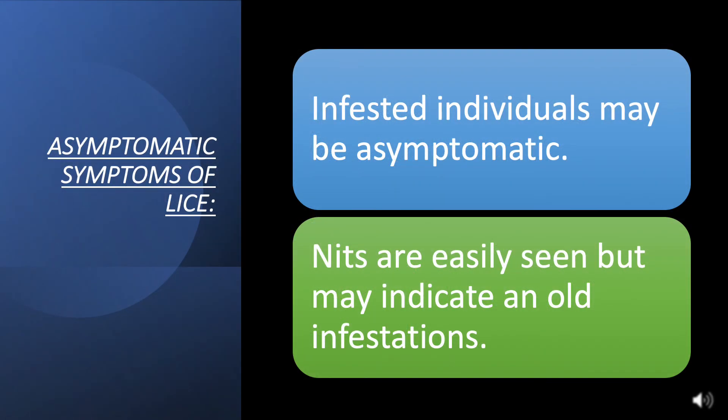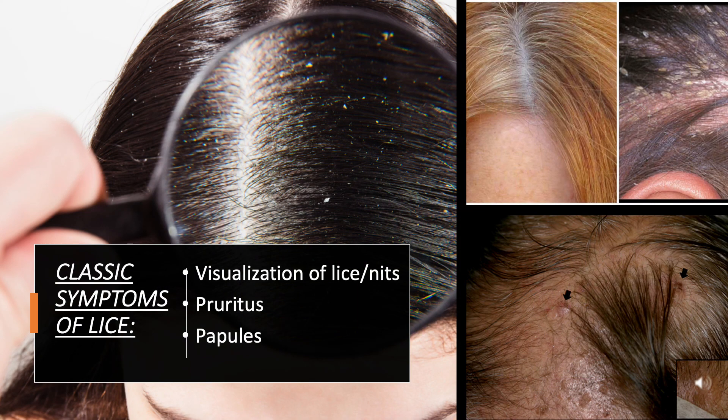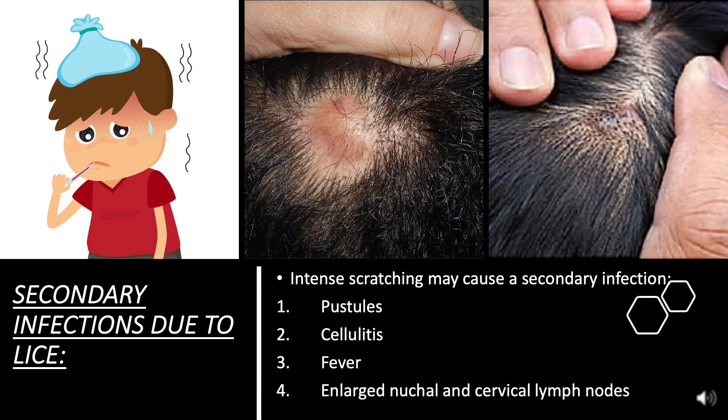Asymptomatic symptoms of lice: infested individuals may be asymptomatic. Nits are easily seen but may indicate an old infestation. Classic symptoms include visualization of lice and nits, pruritus, and papules. Secondary infections due to intense scratching may cause pustules, cellulitis, fever, and enlarged nuchal and cervical lymph nodes.